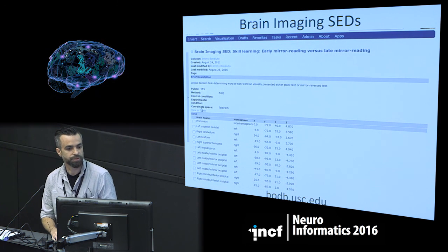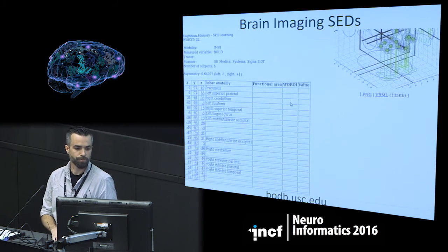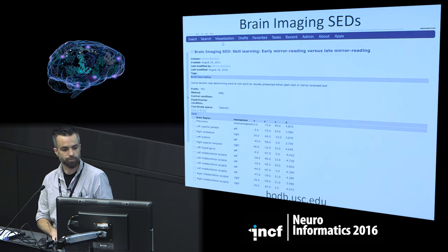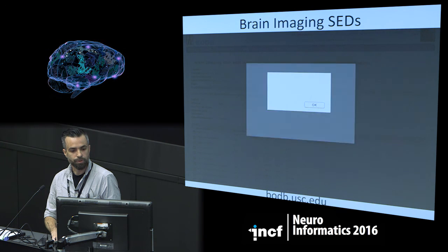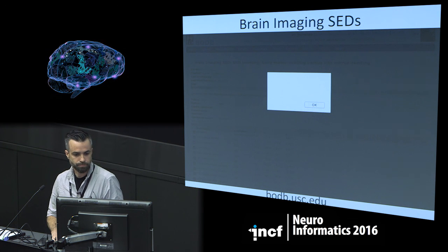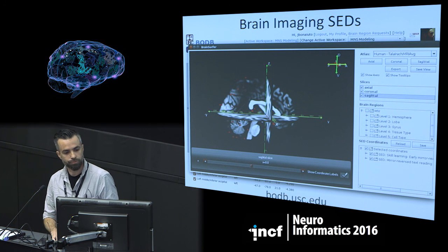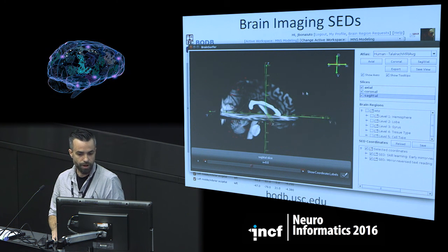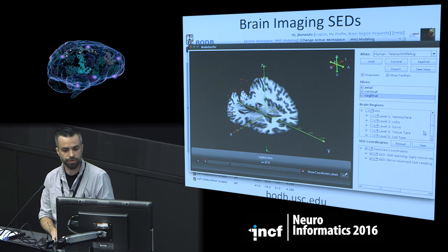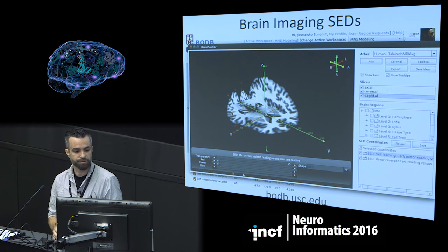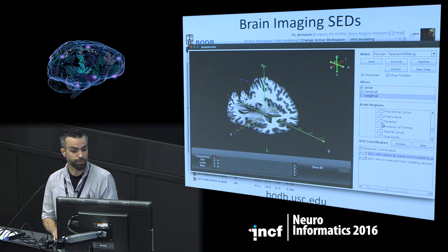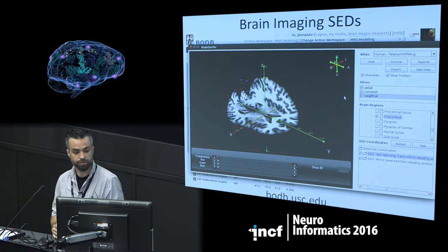This is showing an example — one for skill learning, early mirror reading versus late mirror reading. You can see the link to BRADA, select these coordinates, and launch Brain Surfer to view them in a navigable 3D space, dragging slices around. Here I've selected two SEDs — mirror reverse text reading versus plain text reading, and early mirror reading versus late mirror reading — and we can change the color of coordinates to see where they overlap, then view different brain regions as 3D meshes.